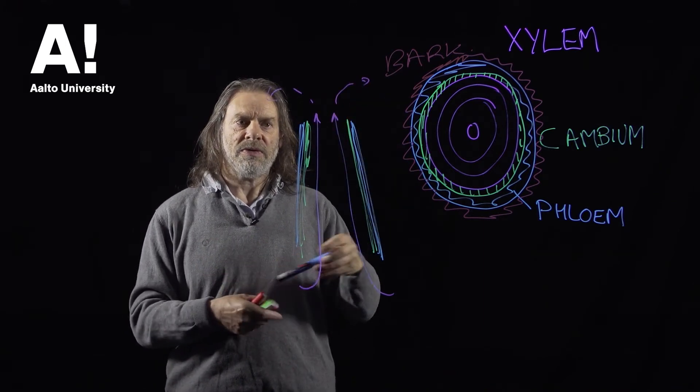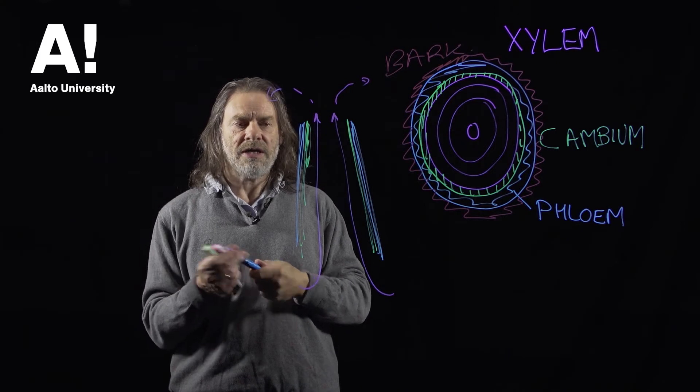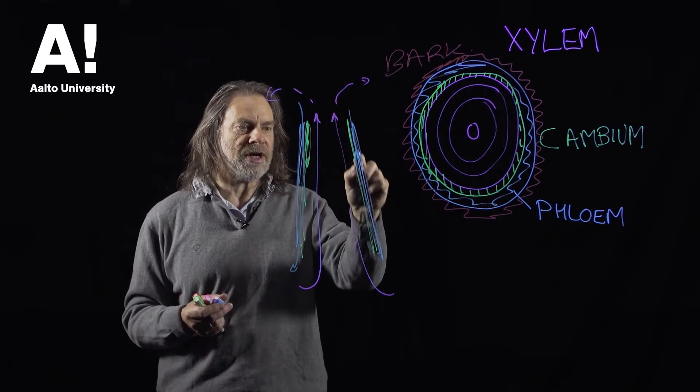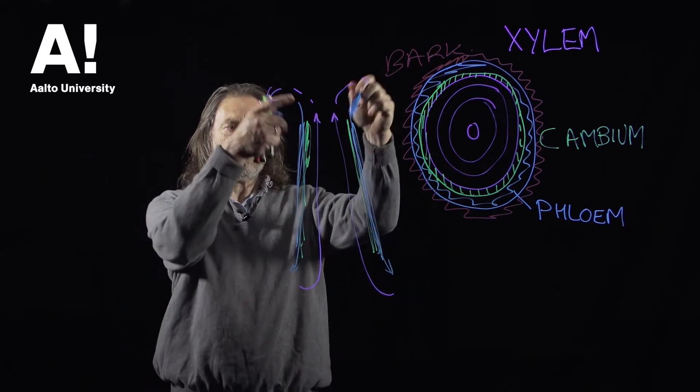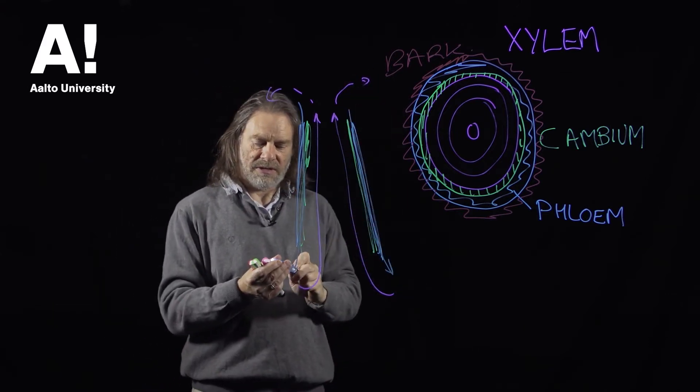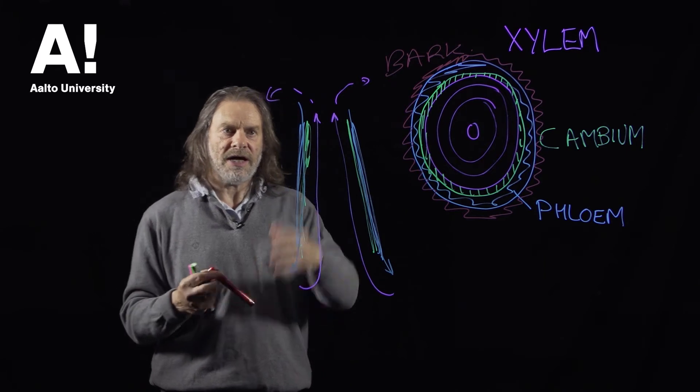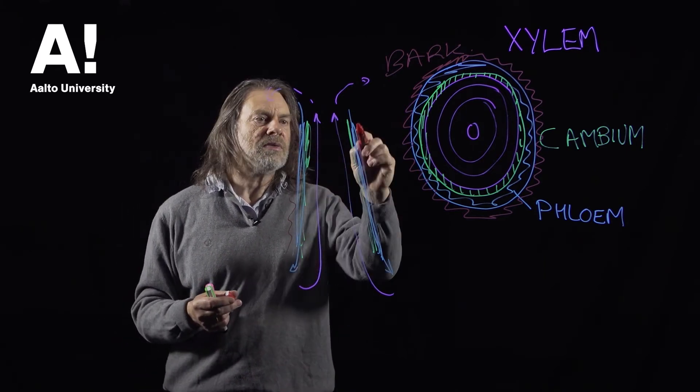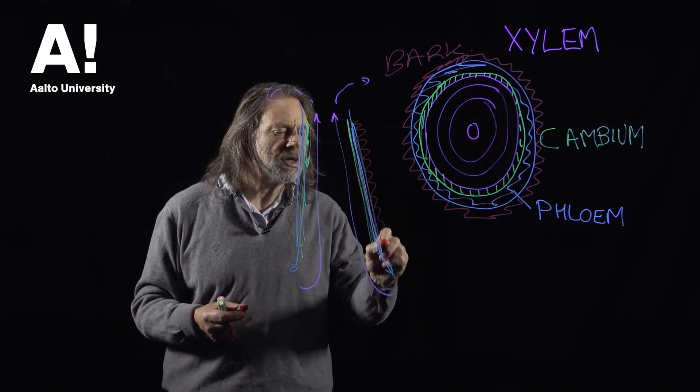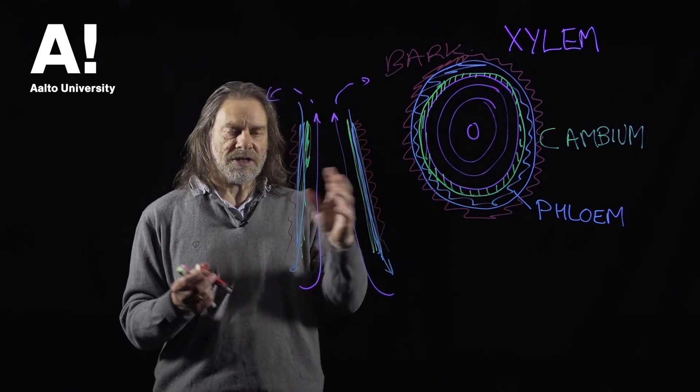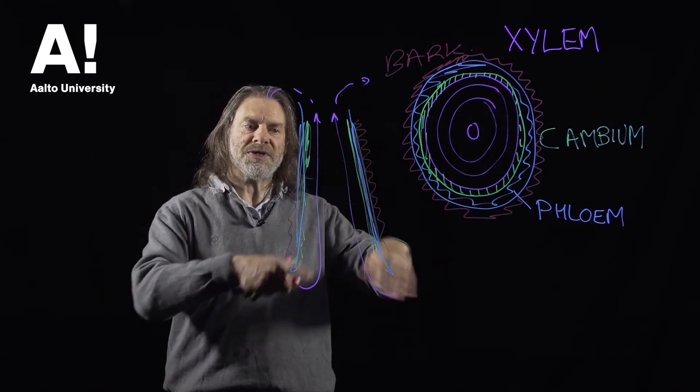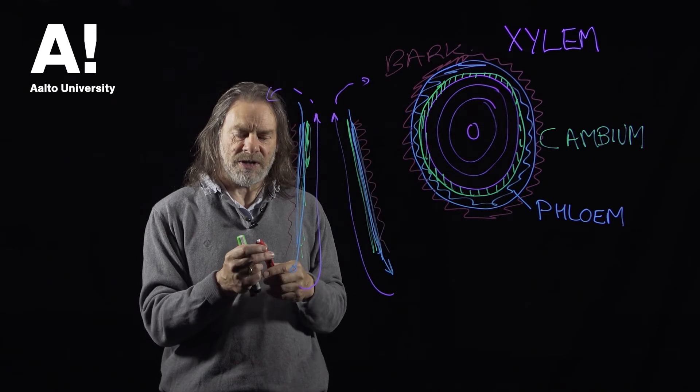And the phloem, we have a conduction in the opposite direction. And this is the products of photosynthesis that come down in that direction. So that supplies all the nutrients that are needed. Well, the nutrients, the molecules that are made during photosynthesis that are needed to produce cells to make the tree. Whereas a lot of the nutrients, of course, come up from the roots. So we have this double transport pathway.